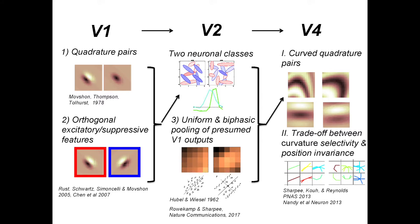What is interesting is that if you look at these features, one can describe them as what one could call a curved Gabor — what was a straight edge now becomes a curved edge. In the direction perpendicular to the edge, a feature goes from positive to negative — like a sine — and from positive to negative to positive — like a cosine. One can see evidence that quadrature pairing is preserved, but now with respect to curved contours rather than straight contours.